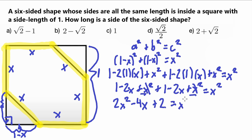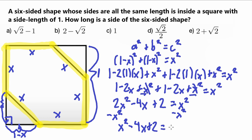This equals x squared on the right side. To set the equation equal to zero, we subtract x squared from both sides. That gives us x squared minus 4x plus 2 equals 0.